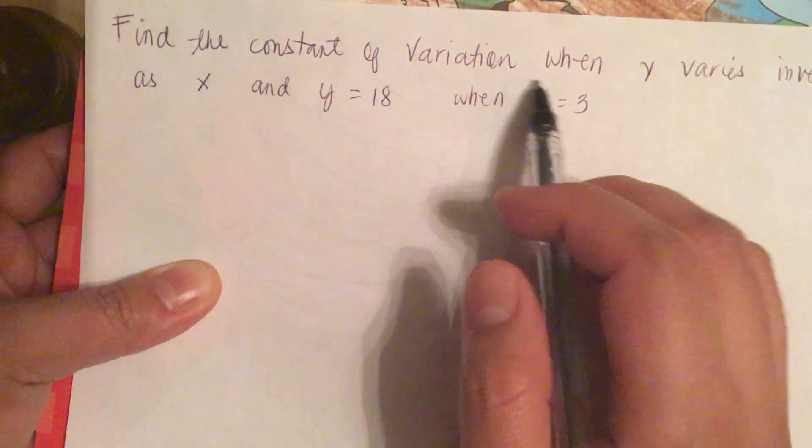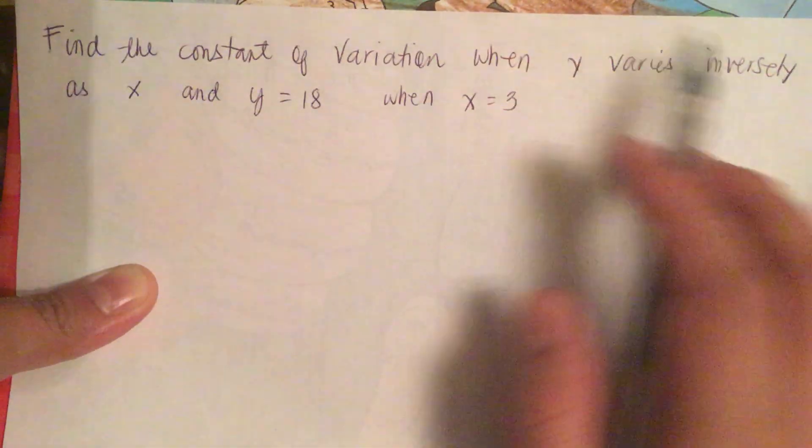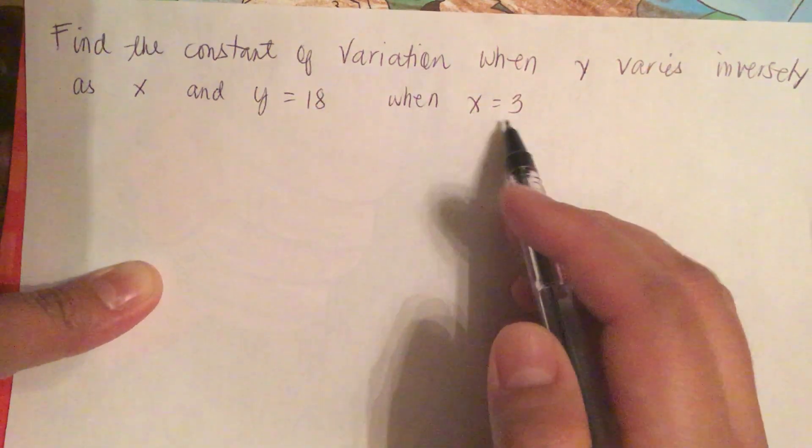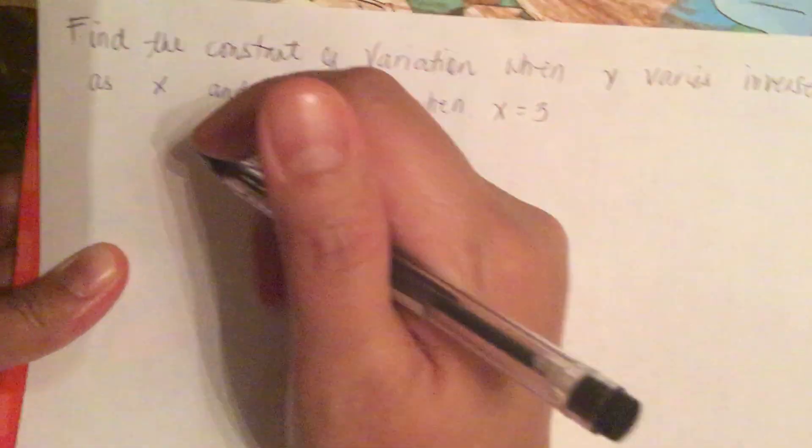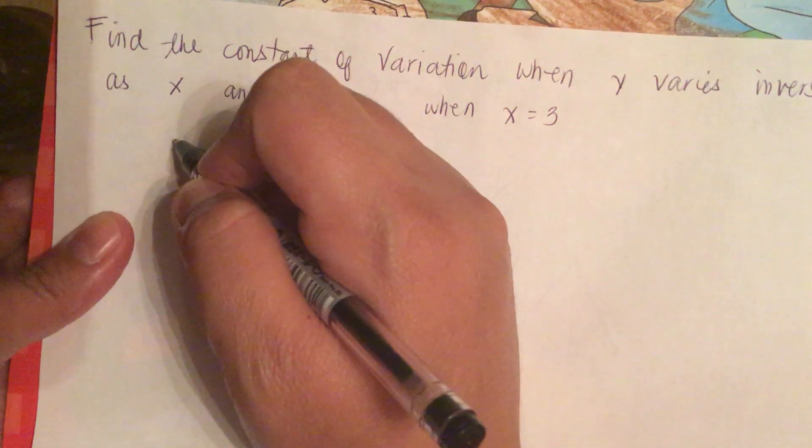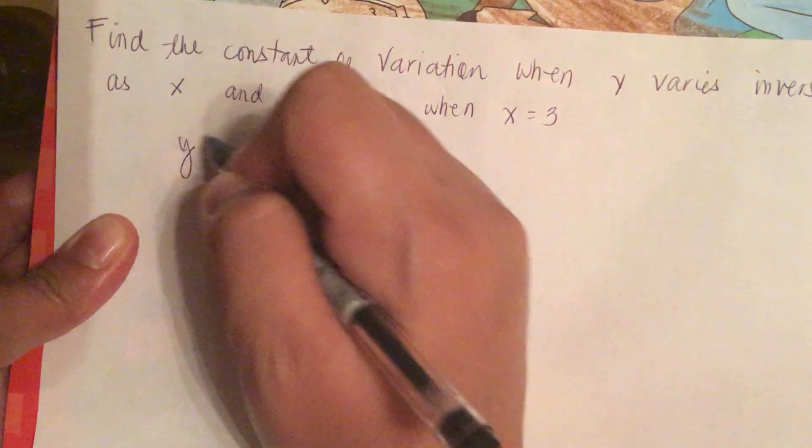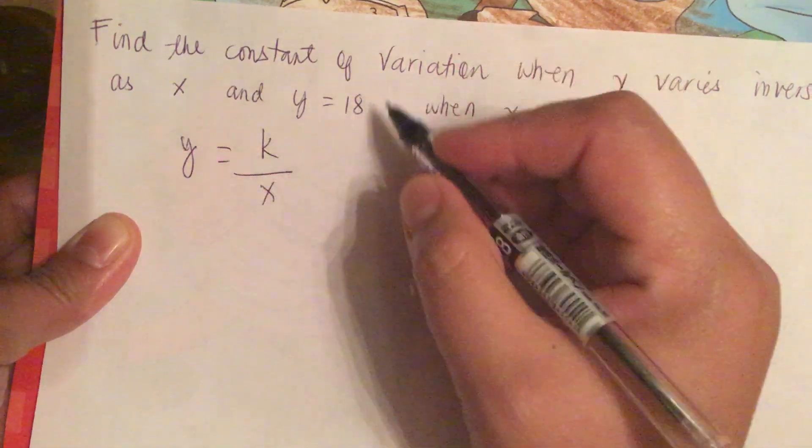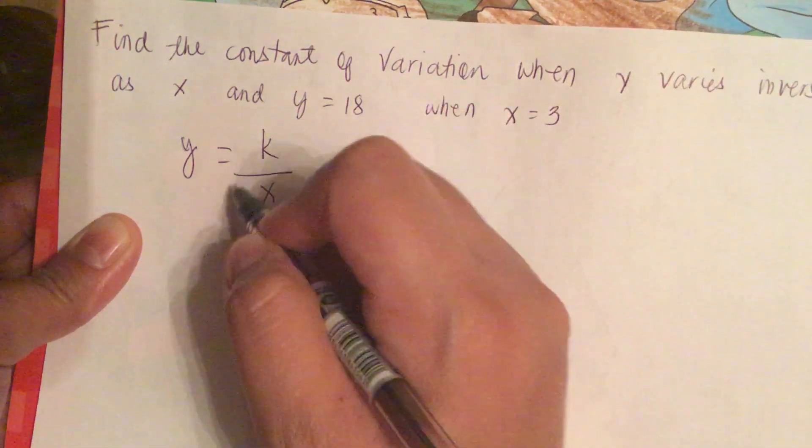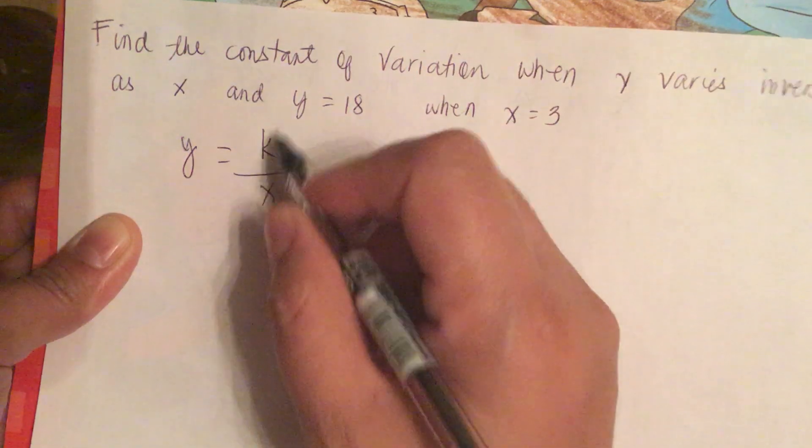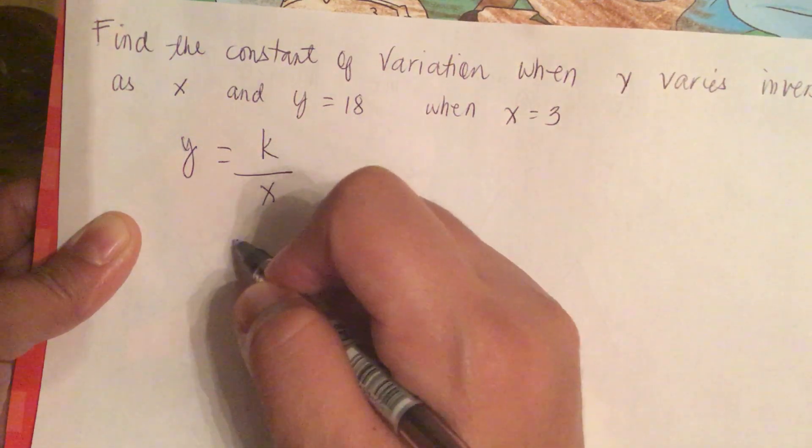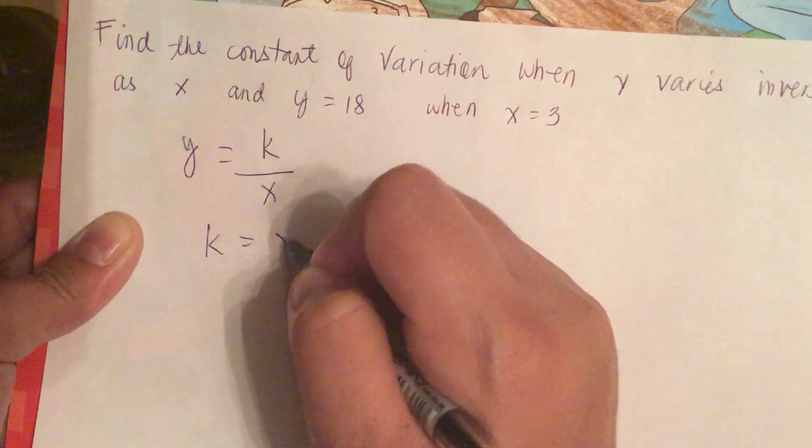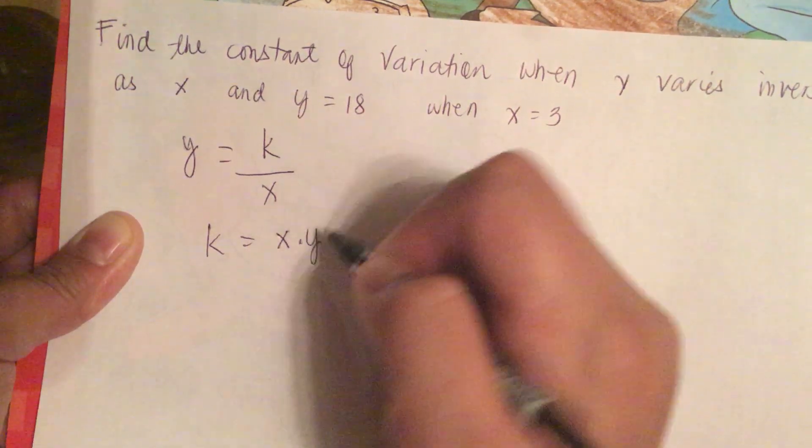Find the constant of variation when y varies inversely as x and y equals 18 when x is equal to 3. So the formula is y is equal to k over x. If we rearrange this, we solve for k is equal to x times y.